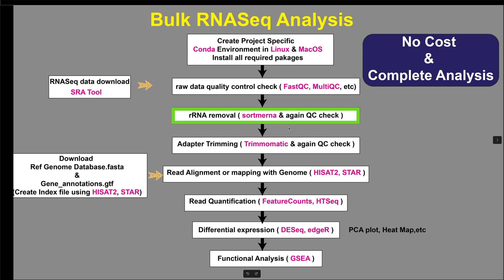SortMeRNA is a tool for filtering, mapping, and clustering ribosomal RNA sequences in metatranscriptomic and other RNAseq data, aiding in the removal of rRNA contaminants for downstream analysis.